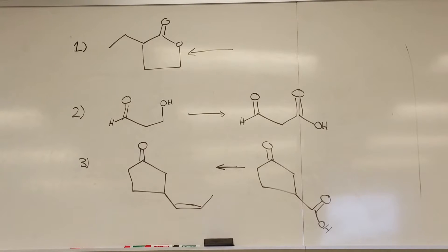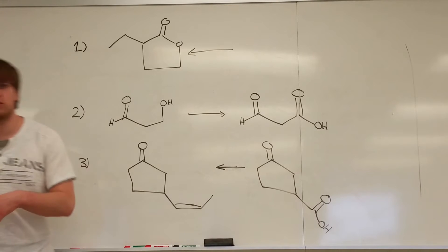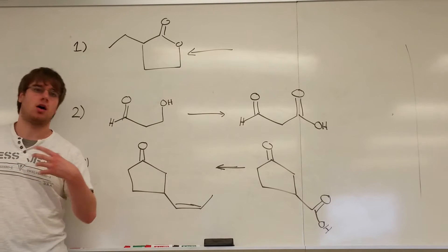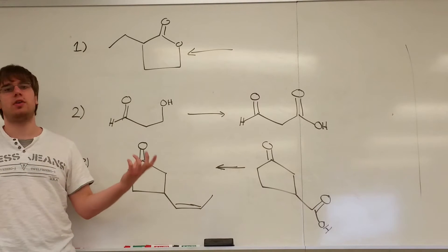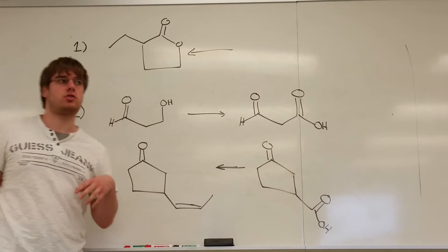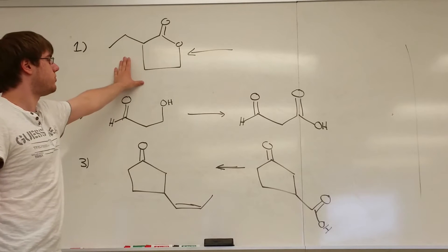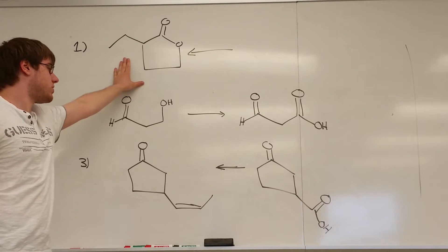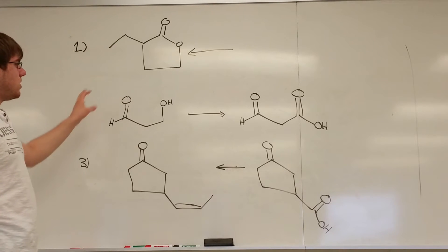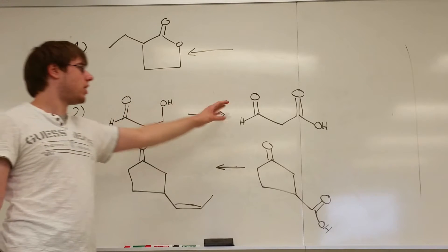There are three questions that require you to use protecting groups and then an assortment of other reactions from exam 2's material, be it carboxylic acid derivative reactions, oxidizing or reducing agents, or maybe even the Wittig reaction. For number one, synthesize this structure from four carbons or less, and then for two and three, turn the reactant into its product.